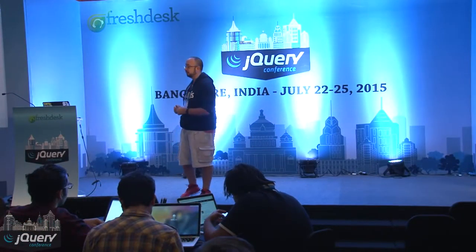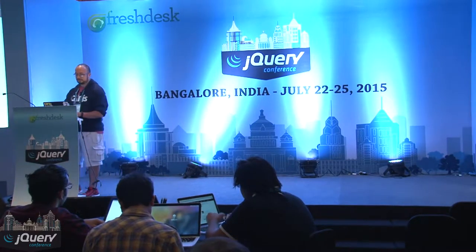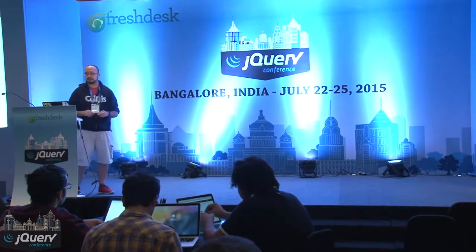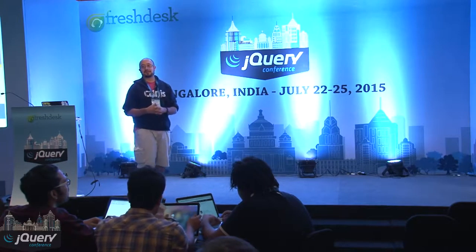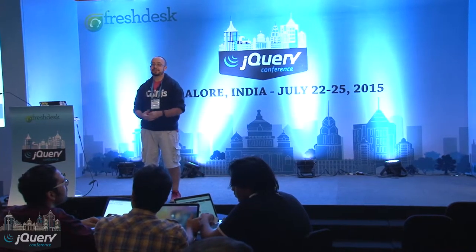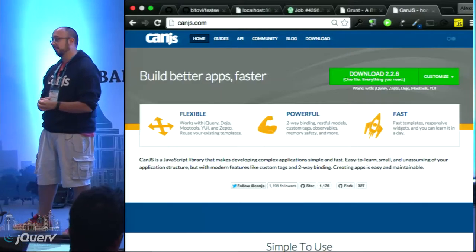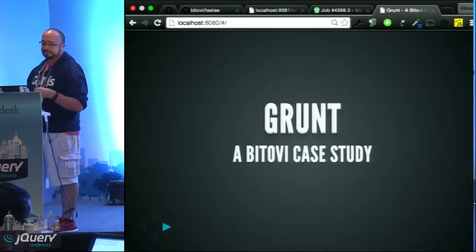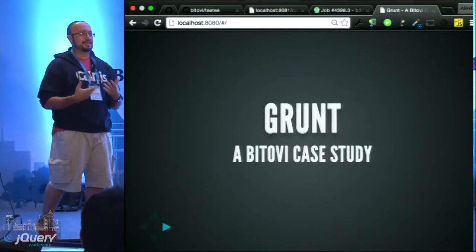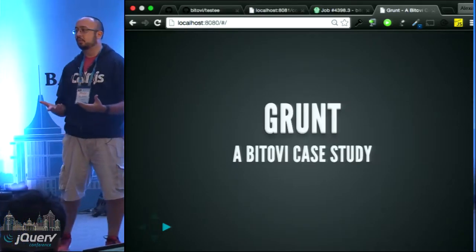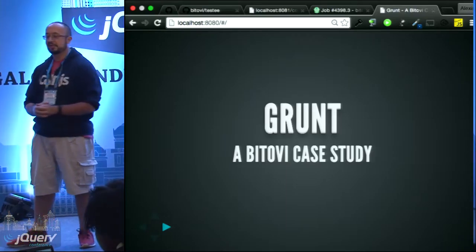One of our biggest projects is CanJS. This is an open source project to help you build your applications. We gave a small talk about it yesterday — feel free to grab me after this session. When you're building a large open source project it gets tricky to maintain. You have different contributors spread out all over the world, volunteer contributors, etc. So you want to automate a few things. I'm going to talk about Grunt and how we use it.